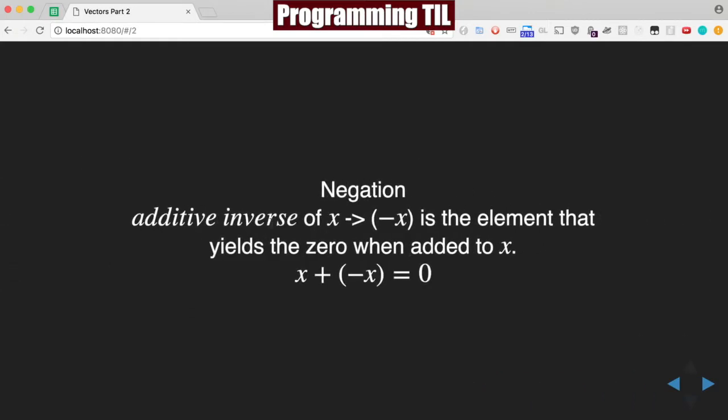If you want to negate a vector, you have the additive inverse of x, which is negative x. It's the element that when added to x yields the zero vector, so x + (-x) = 0.